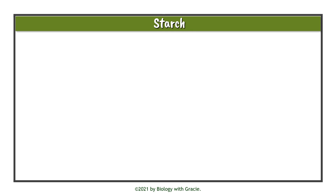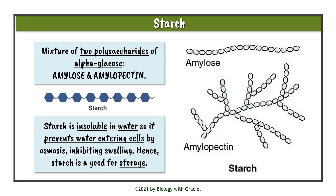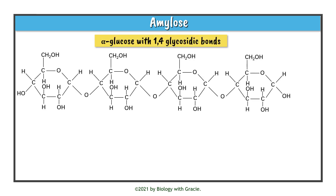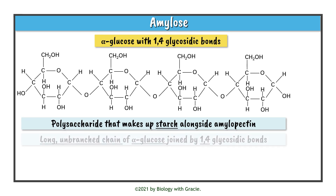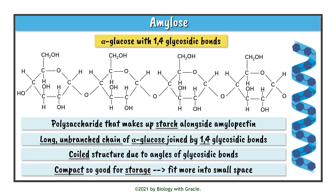Now let's talk about starch in more detail. Starch is a mixture of two polysaccharides of alpha glucose: amylose and amylopectin. Starch is insoluble in water, which prevents water from entering cells by osmosis so that swelling does not occur — this makes starch a really good molecule for storage. Amylose is a long unbranched chain of alpha glucose joined by 1,4 glycosidic bonds. It has a coiled structure due to the angles of the glycosidic bonds, making it compact — good for storage as it can fit more into a small space.